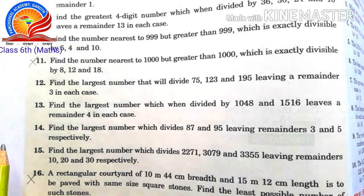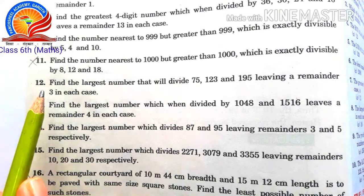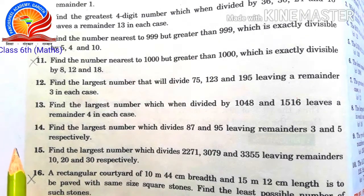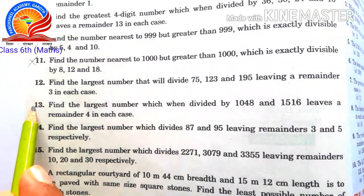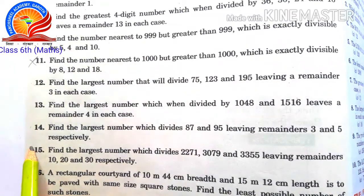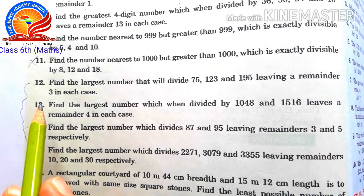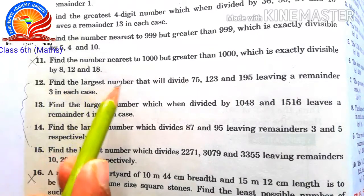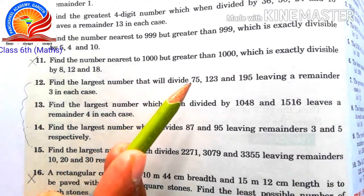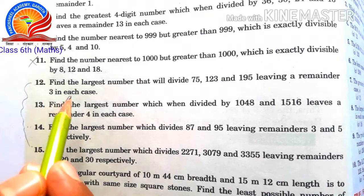We will now do question number 12, which is related to your class and important topics. Questions 13, 14, and 15 are similar. We will solve question 12 and the rest will be homework. Question 12: Find the largest number that will divide 75, 123, and 195, leaving a remainder of 3 in each case.